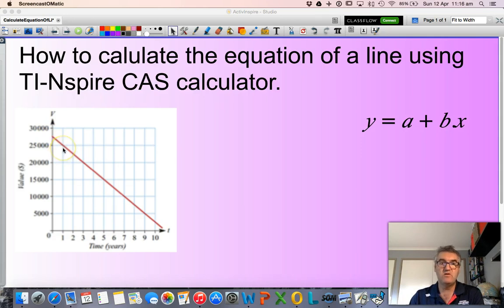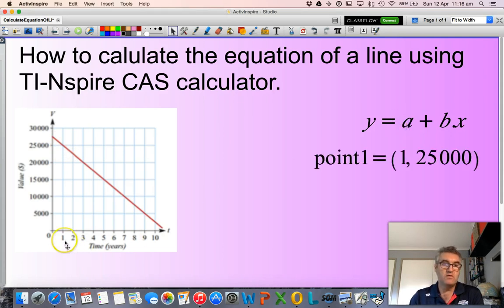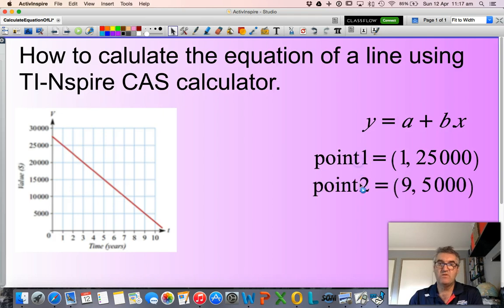So this value here, of this point, would be... My time value is 1, and my dollar value is 25,000. Likewise, I don't exactly know the x-intercept, so I'll work my way backwards, and I'll find this point here. So here we go. My time value is 9, and my dollar value is 5,000.